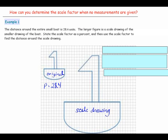State the scale factor as a percent, then use the scale factor to find the distance around the scale drawing. So first, state the scale factor as a percent — we are going to have to calculate that. Then use the scale factor to find the distance around the scale drawing. What we're looking for is the perimeter of the scale drawing.